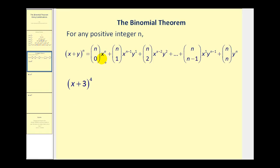This can look a little intimidating, but again the idea here is to recognize the pattern. Notice the exponent on x in the first term matches the original exponent, and then we decrease the factors of x by one and start picking up factors of y. Those red coefficients can be found from these combinations: n choose zero, n choose one, n choose two, all the way to n choose n.